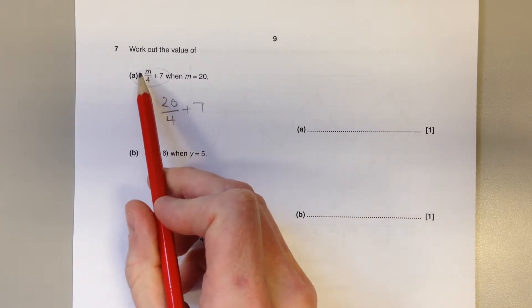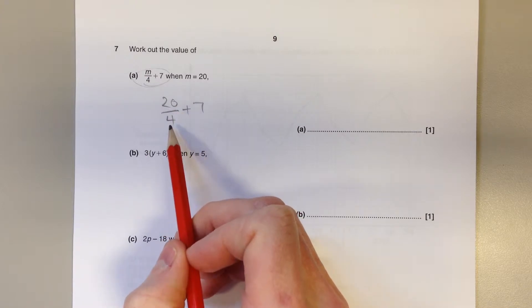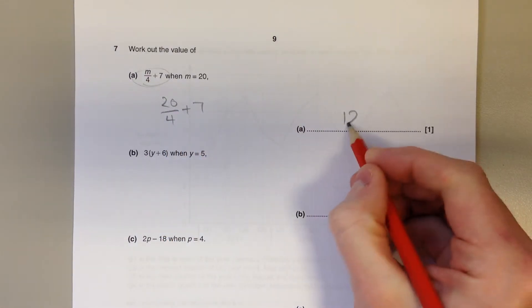The first thing we need to do with the m is divide it by 4, so 20 divided by 4 is 5, then we add the 7 to get 12.